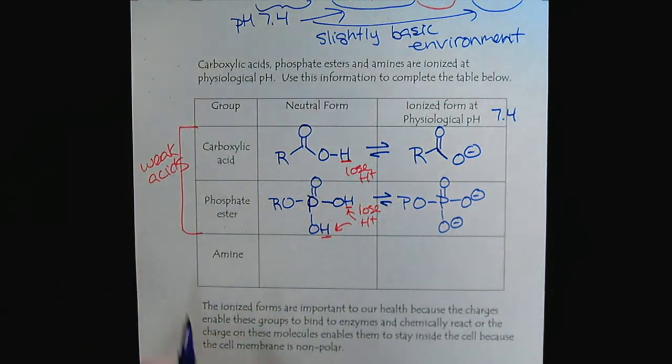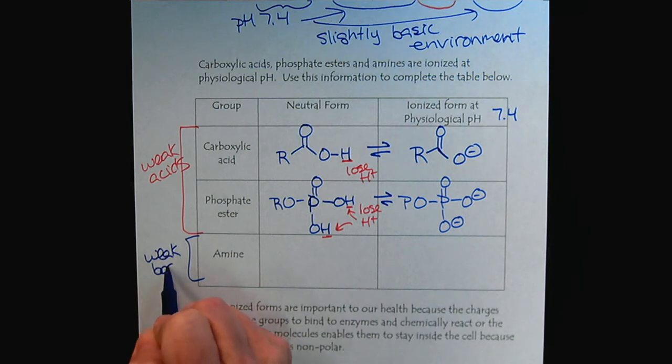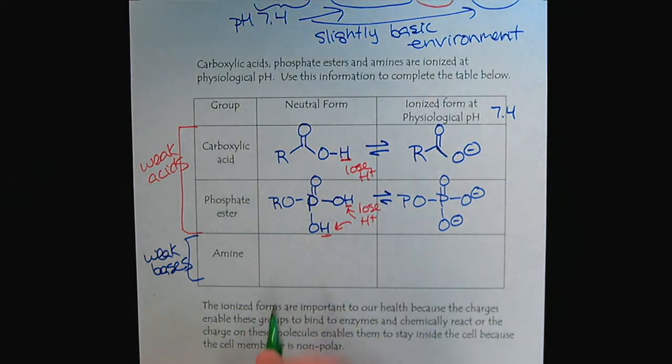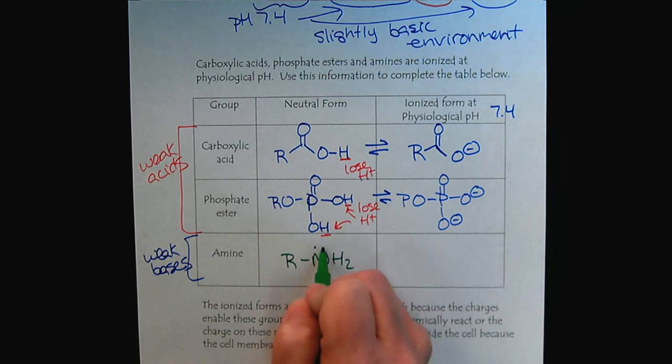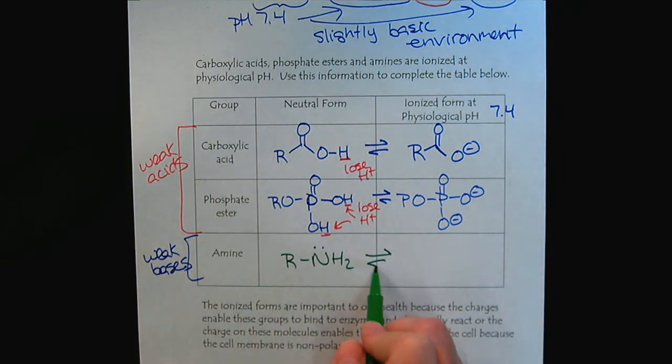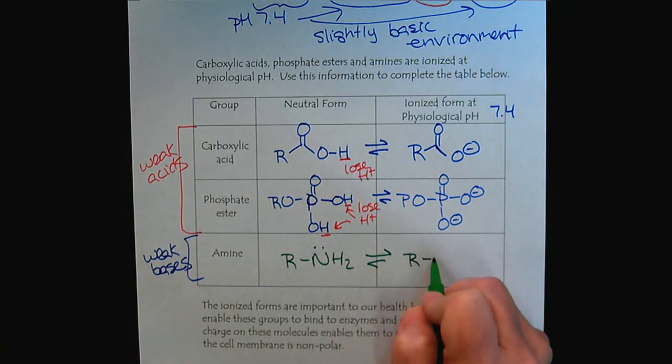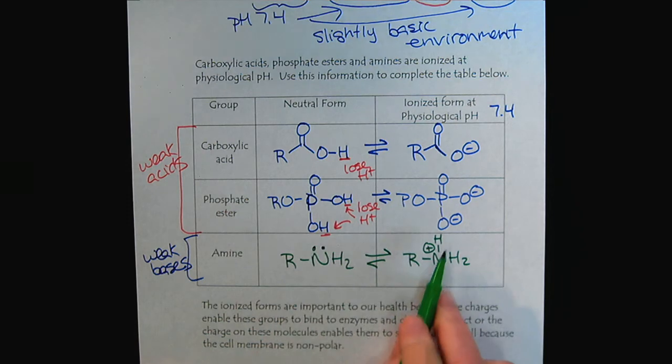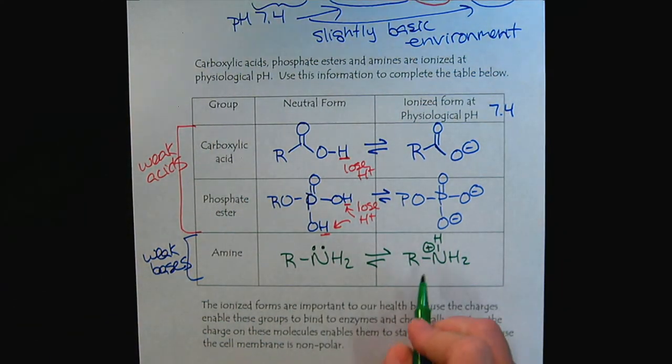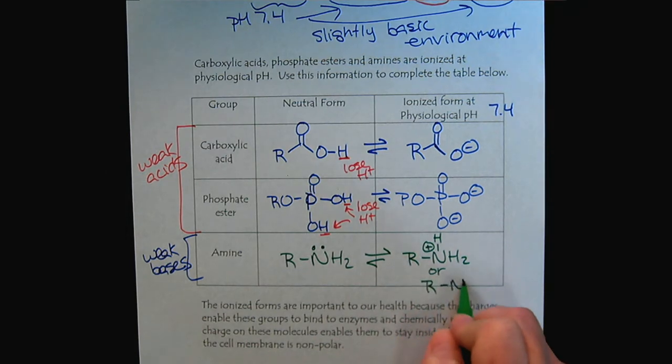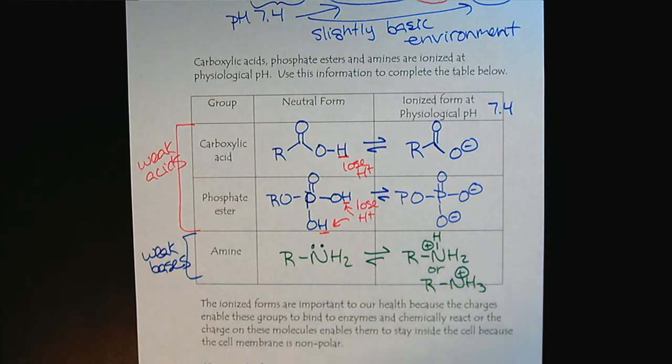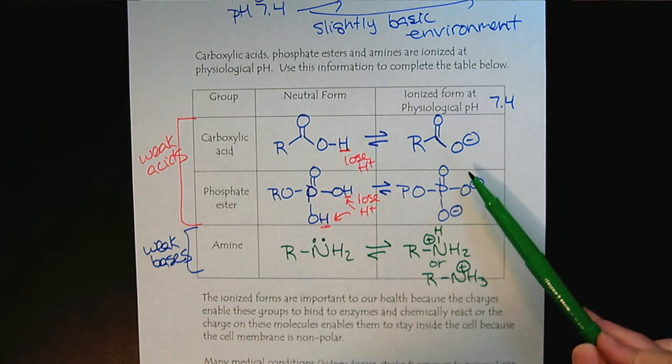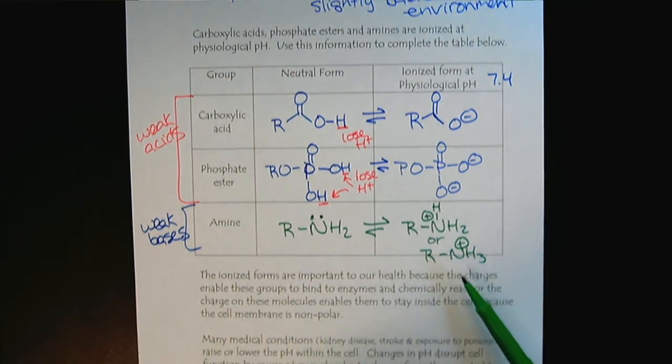Amines, on the other hand, are weak bases. So pH 7.4 is a slightly acidic environment. If we look at our amines, we tend to think about them in their neutral form. However, they become protonated at physiological pH. So there's the H+, that lone pair on the nitrogen forms a bond with the protons floating around. The other way to draw this would simply be this way.